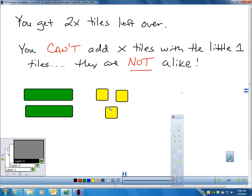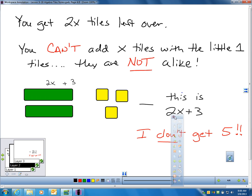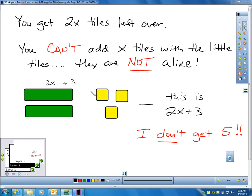It's important to understand you cannot add x tiles with the little one unit tiles. They're not alike. When you take two x and you add three, do you somehow get five out of that? The answer is no, because these are not like terms. I cannot add things together that are not alike. It's just two x plus three. They cannot be combined into one term.